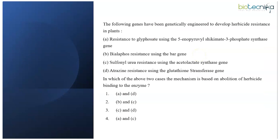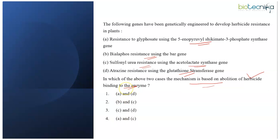Next question: the following genes have been genetically engineered to develop herbicide resistance in plants. A) Resistance to glyphosate using the 5-enolpyruvylshikimate-3-phosphate synthase (EPSPS) gene. B) Bialophos resistance using the bar gene. C) Sulfonylurea resistance using the acetolactate synthase gene. D) Atrazine resistance using the glutathione S-transferase gene. In which two cases is the mechanism based on the abolition of herbicide binding to the enzyme? The correct answer is statements A and C.